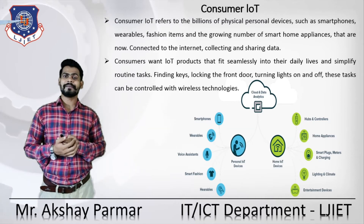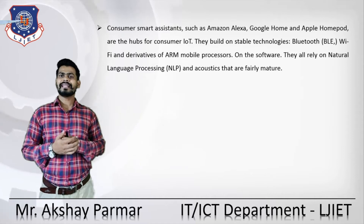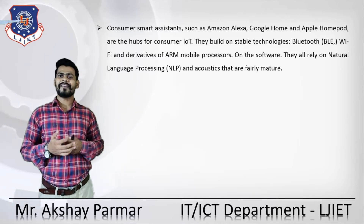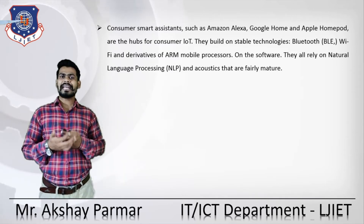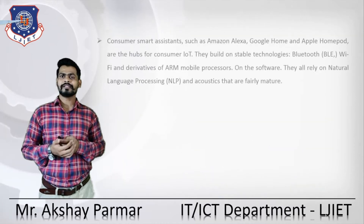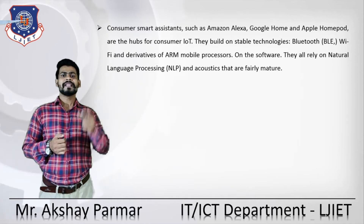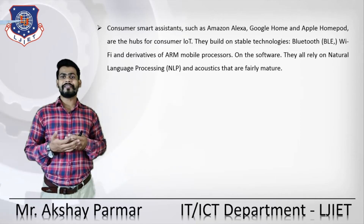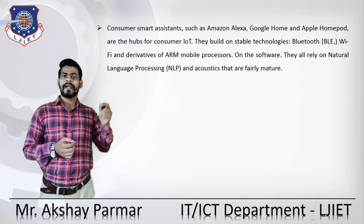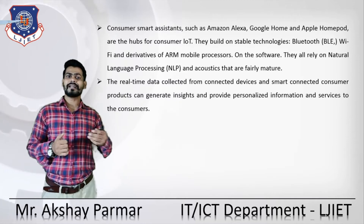Examples of consumer IoT include smart assistants such as Amazon Alexa, Google Home, and Apple HomePod — hubs for consumer ability that build on stable technologies like Bluetooth, Wi-Fi, and mobile processors. On the software side, they rely on natural language processing and acoustics that are fairly mature. You can give a task to Amazon Alexa or Google Home simply by speaking in your native language, and the smart device processes your command using NLP.